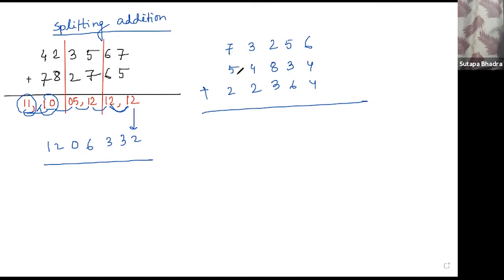7 plus 5, 12 plus 2, 14. 14 here. Now 3 plus 4, 7 plus 2, 9. So it's 0, 9.